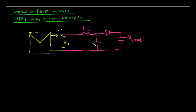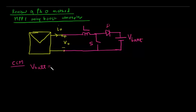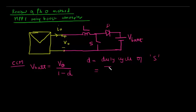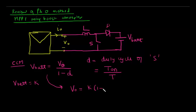This boost converter has an inductor, a switch, and a diode. For a boost converter working in continuous conduction mode, we can write the output voltage of the boost converter, which is V_BAT, equal to the input voltage of the boost converter, which is V0, divided by (1 - D), where D is the duty cycle of switch S. It can also be written as the on-period of the switch divided by the time period. Generally the battery voltage V_BAT is constant, let us say K, so this equation can be written as V0 = K × (1 - D).